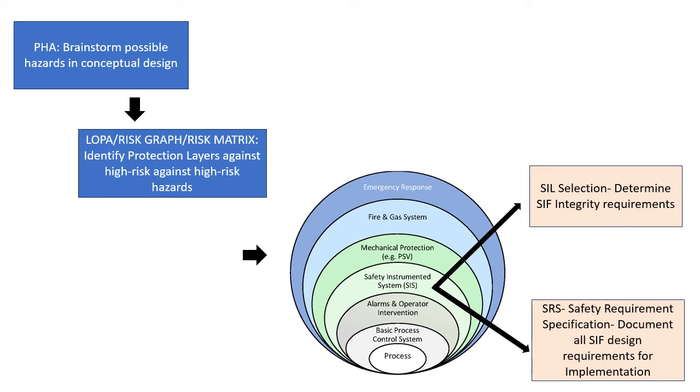What is done in hazard and risk assessment? This is the brainstorming to identify the possible hazards in the conceptual design. This is qualitative, not quantitative. Then there is a quantitative LOPA, risk graph, or risk matrix where protection layers against high risk hazards are identified. This is where the risk gets quantified.